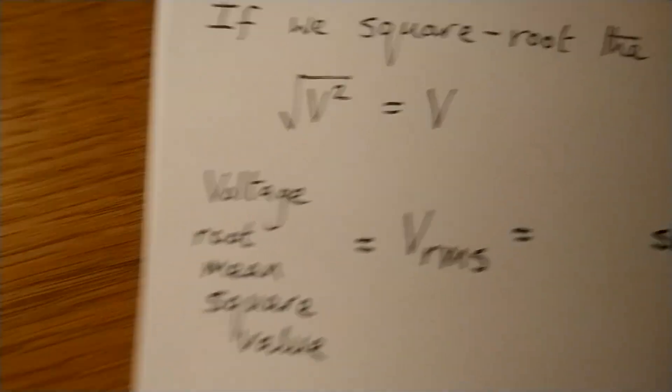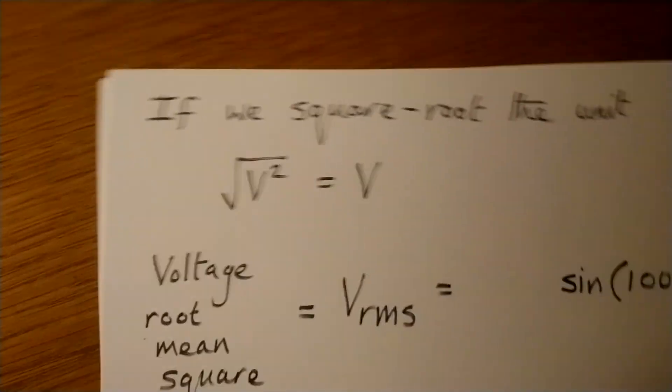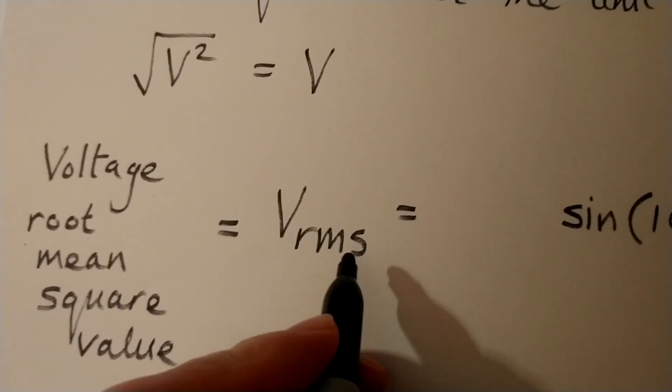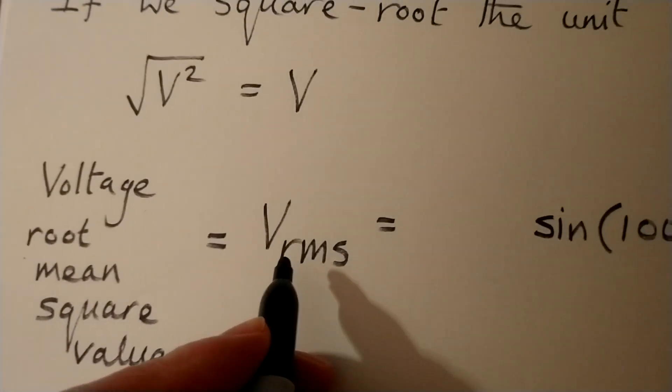So the RMS subscript there, that actually tells us what to do. And we do it in reverse. So we do the square, then we work out the mean, and then we square root it.